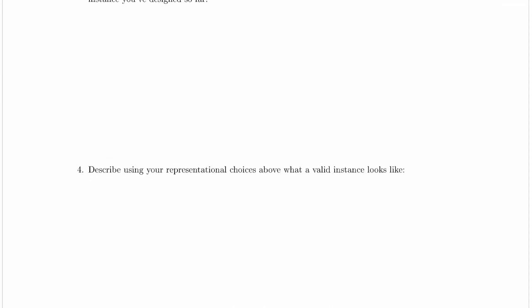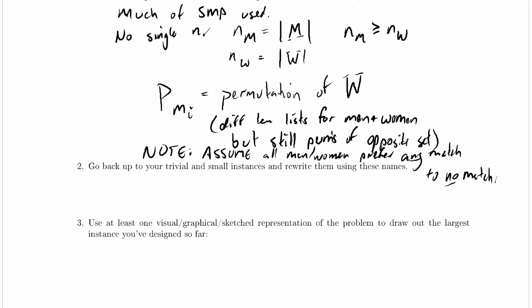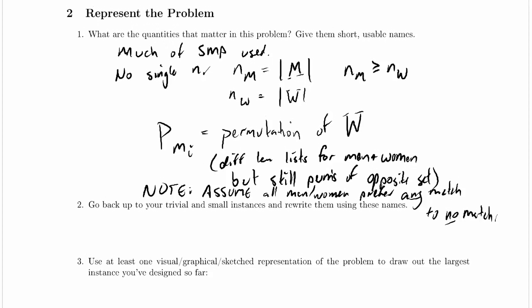That just leaves the question of what constitutes a valid instance using our representational choices above. I'm going to scroll back up and look at what we've got. We have most of SMP as it was,